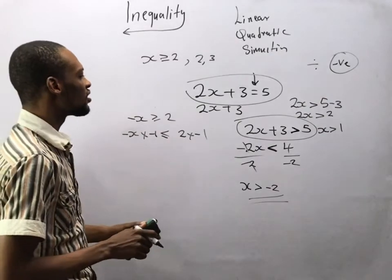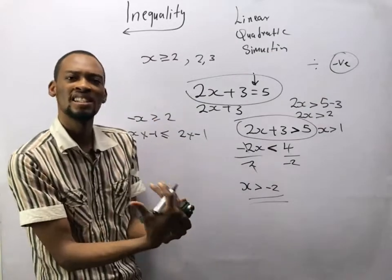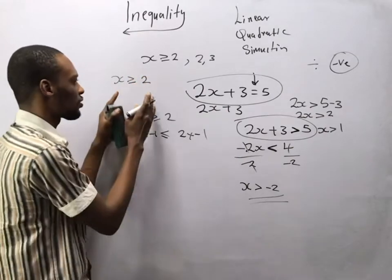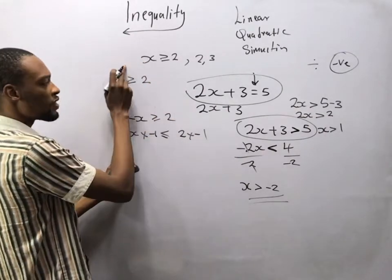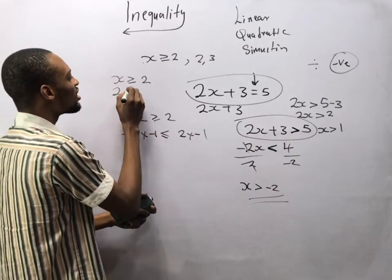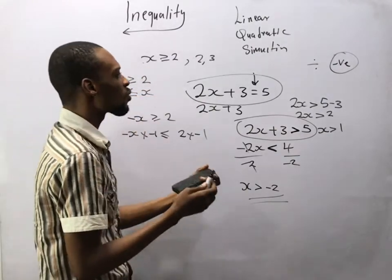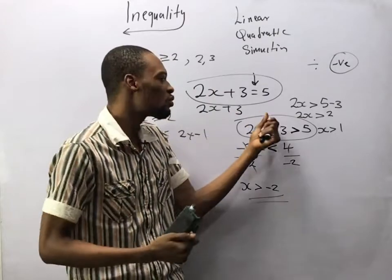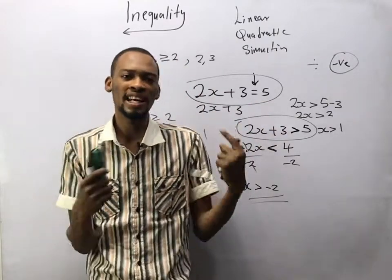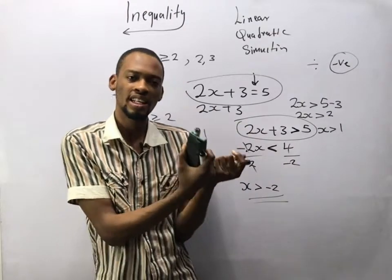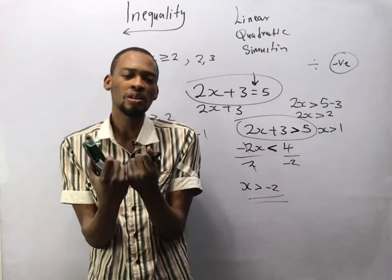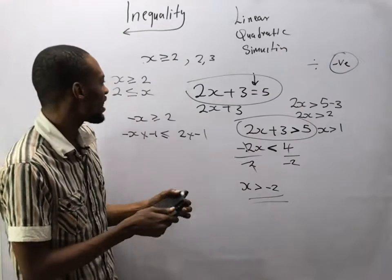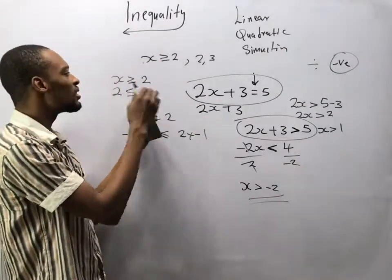Number three: if you reverse an inequality, the sign also changes. For example, if I say s is greater than or equal to 2, by the time I reverse this, it becomes 2 is lesser than or equals s. So we solve inequalities exactly the way we solve equations, except that anytime you multiply both sides by a negative number the sign changes, and anytime we reverse the inequality the sign also changes.